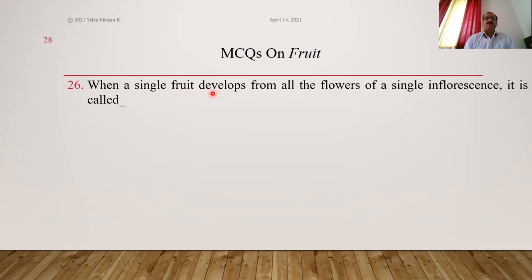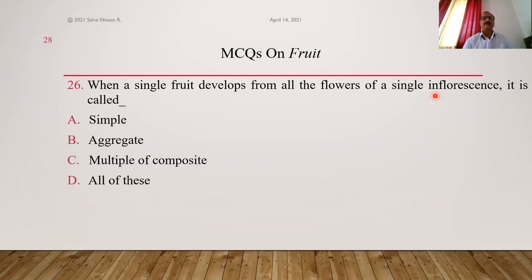When a single fruit develops from all the flowers of a single inflorescence — the entire inflorescence is converted into a single fruit — that fruit is called a multiple fruit or composite fruit. Examples as per syllabus: sorosis and syconus types. Answer is C.